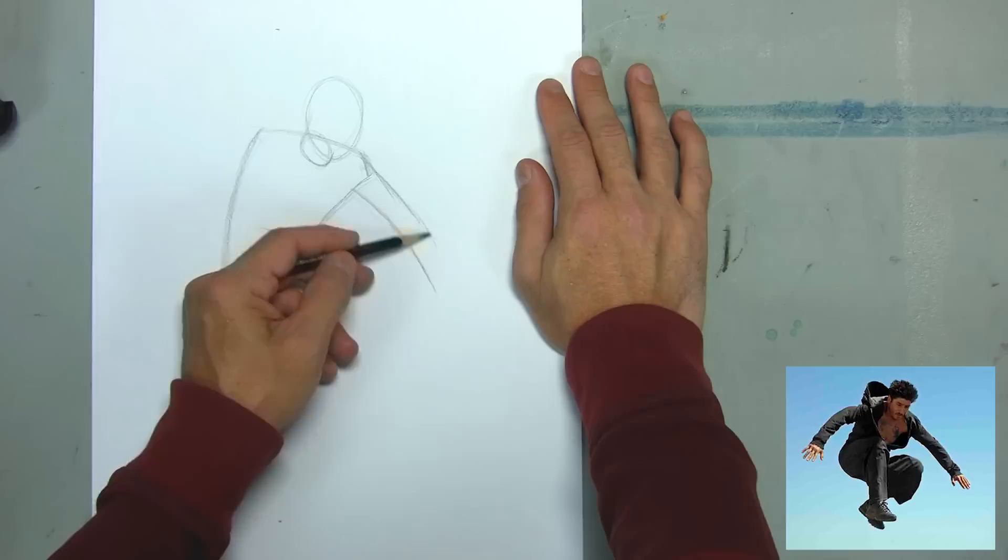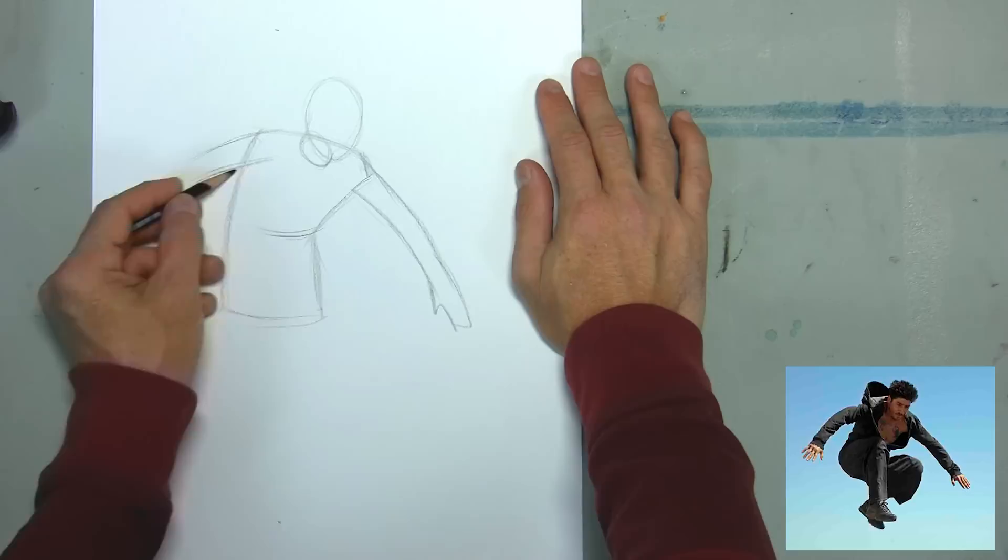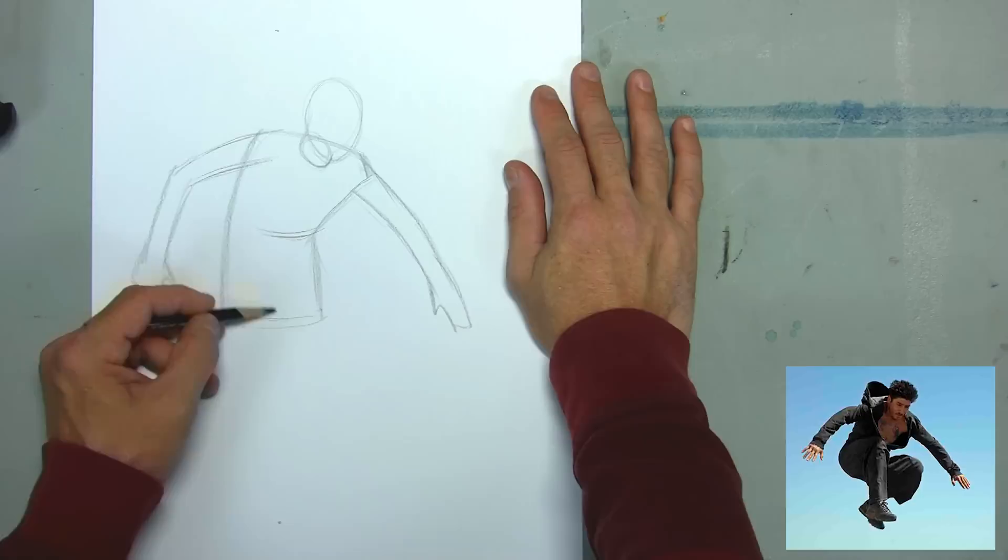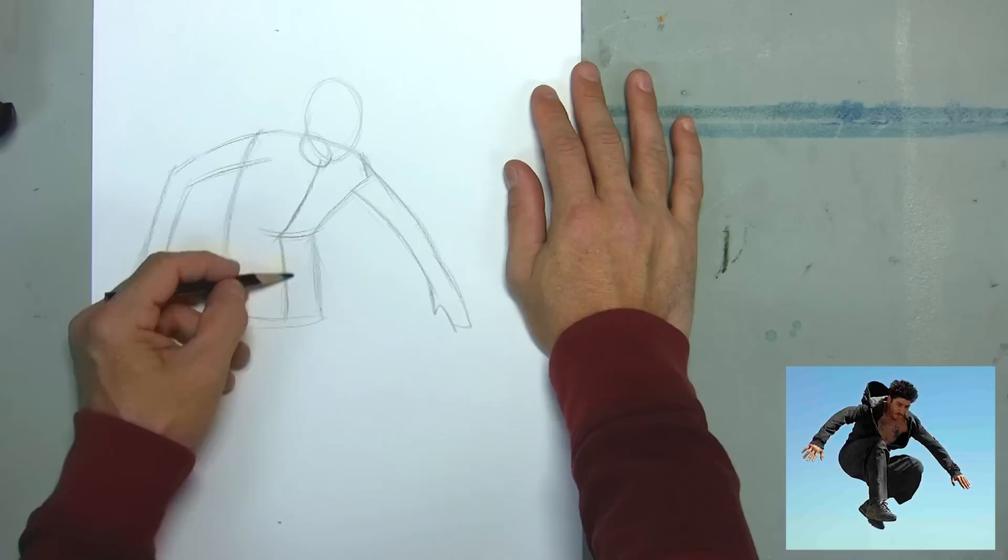I'm taking this pose of David Bell doing parkour and I'm reducing it down to very basic shapes. This is called figure construction. In the torso, I've taken it and turned it into what would be called the pillow shape. So you have a bent side and you have a stretched side. The tops and the bottoms are wider than the center point, which is narrower.